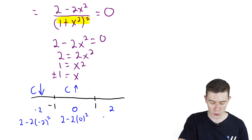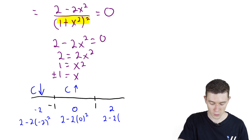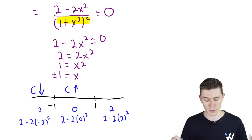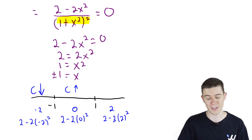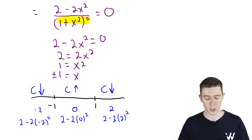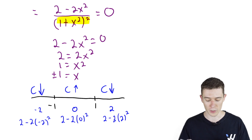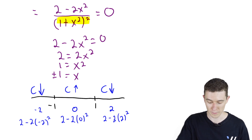One more time — we'll plug in 2: 2 minus 2 times 2 squared. Two squared is 4, times 2 is 8, so 2 minus 8 is negative again. Our function is concave down on the interval from 1 to infinity.